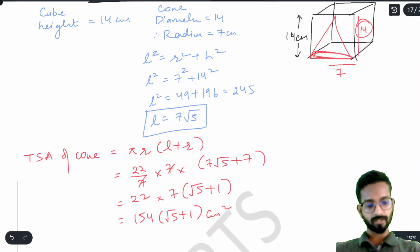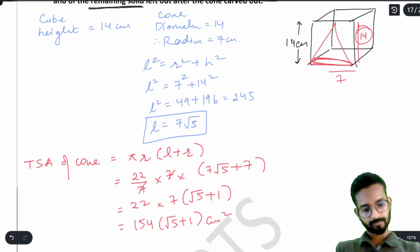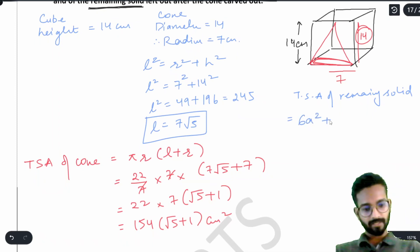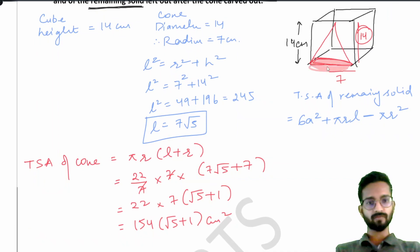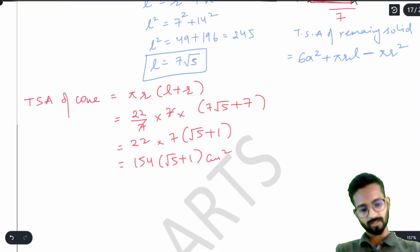We also need the surface area of the remaining solid. TSA of remaining solid = 6a² (full cube) + π r l (lateral cone) − π r² (circular base removed). This gives: 6 × 14² + π r(l − r) = 6 × 196 + (22/7) × 7 × (7√5 − 7).